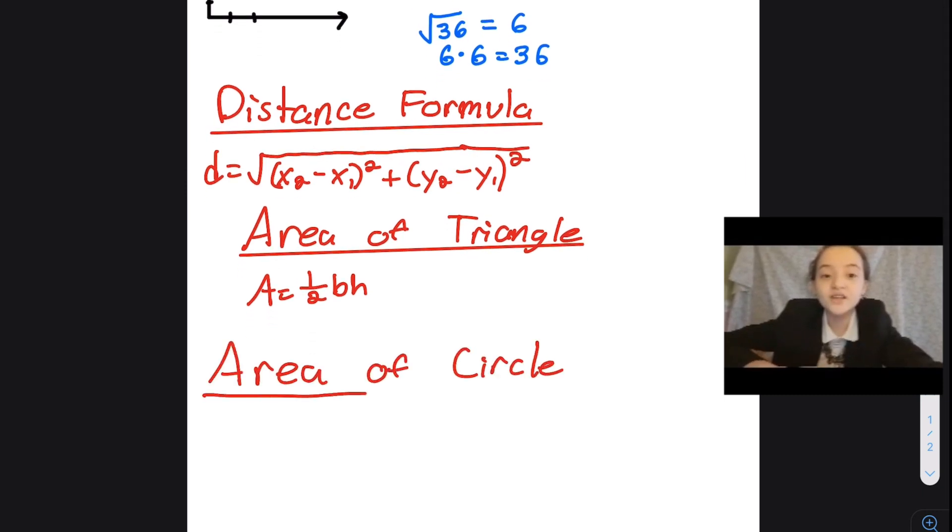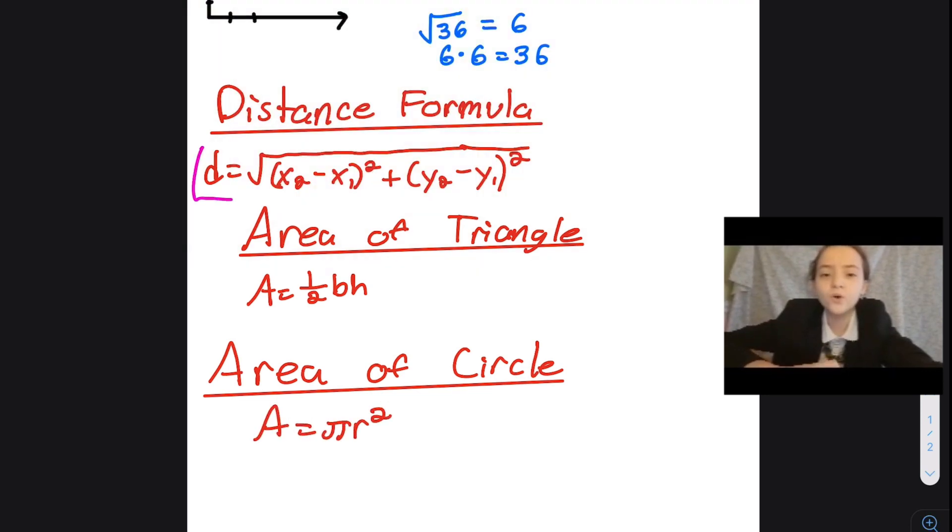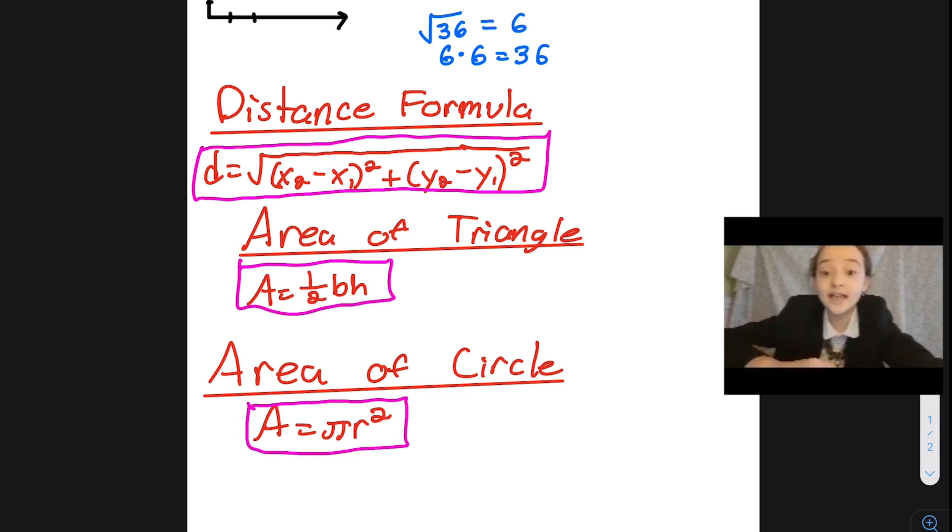This formula is pi times the radius squared. Pi is an irrational number, meaning it goes on forever. We will be using the digit 3.14159. The radius is the length of the center of the circle to any edge.